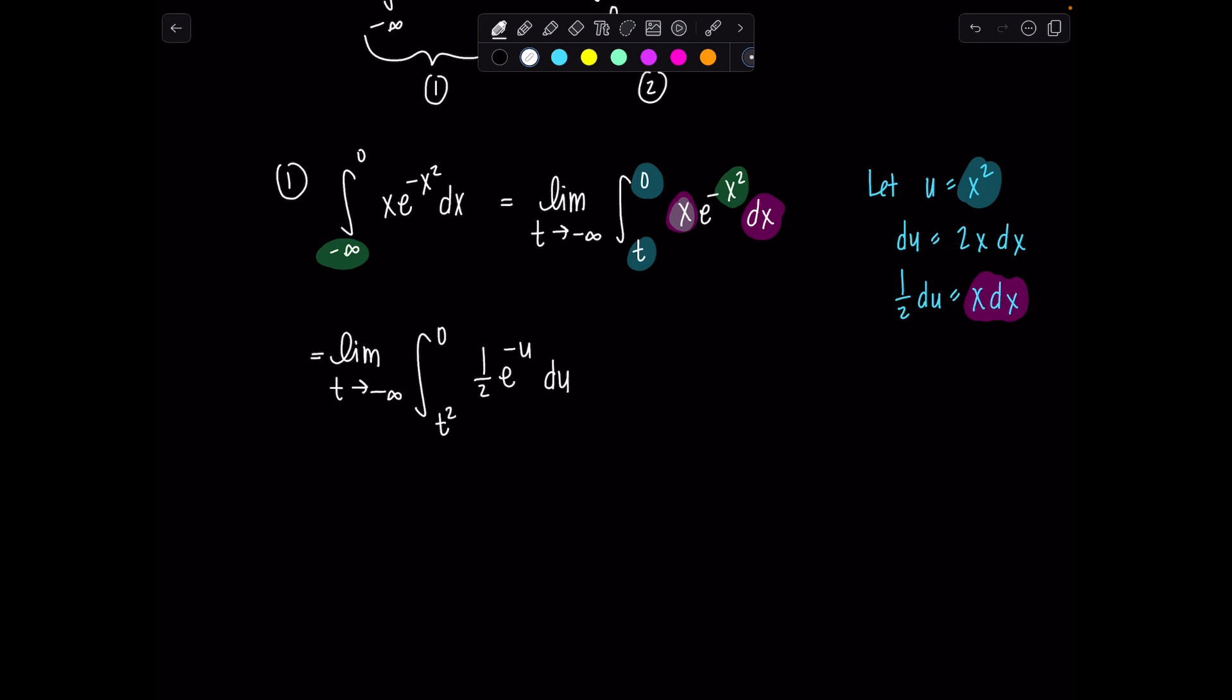And then I'm going to have e to the negative u. Remember, I didn't let u equal negative x squared, only x squared. Why? I just like it better. Now, we can evaluate this integral. Antiderivative of e to the negative u would be negative e to the negative u. And I'm just going to keep the one half and still write limit. So we have limit t goes to negative infinity. Taking the negative out, I'm taking the one half out, and then I'm going to evaluate e to the negative u from the limits t squared to zero.